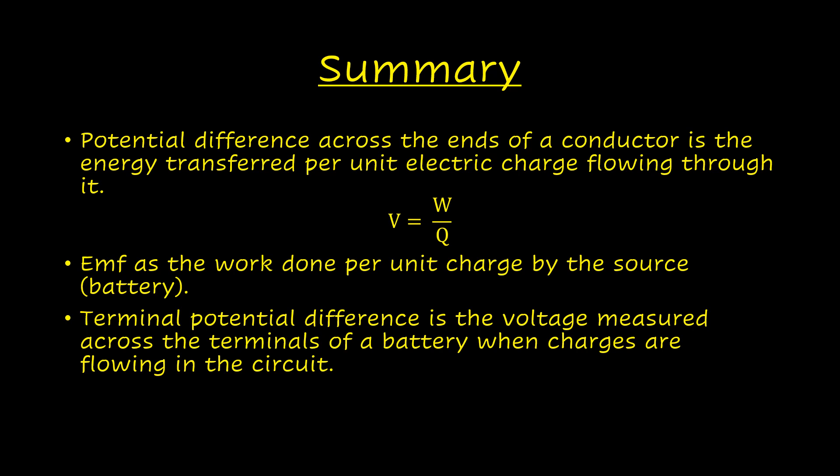In summary: the potential difference across the ends of a conductor is the energy transferred per unit electric charge flowing through it, given by V = W ÷ Q. EMF is the work done per unit charge by a source such as a battery, equal to the potential difference measured across the terminals of a battery when no charges are flowing in the circuit. The terminal potential difference is the voltage measured across the terminals of a battery when charges are flowing in the circuit.